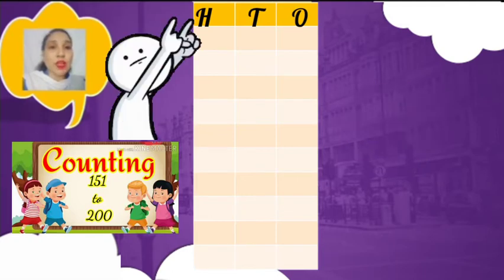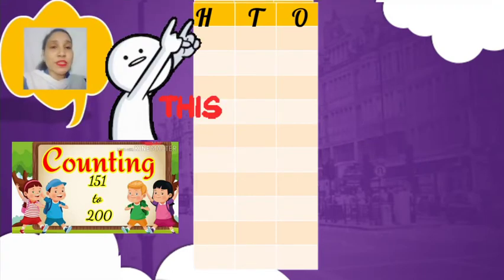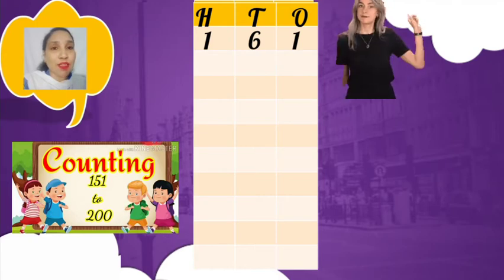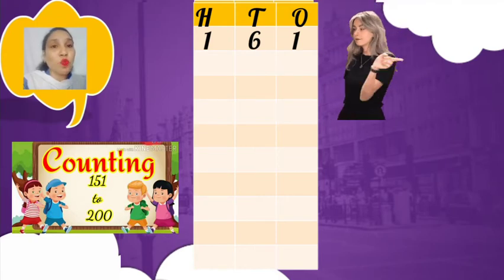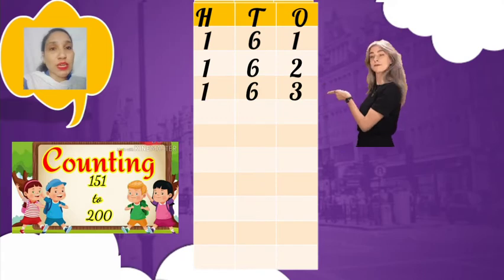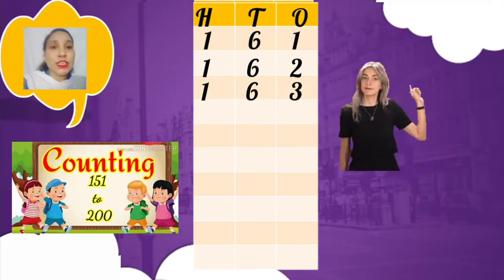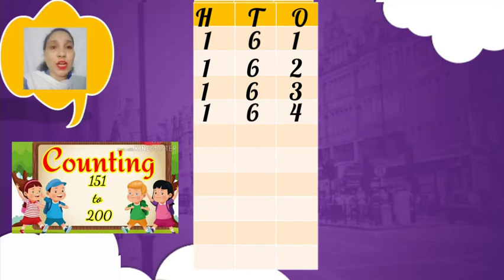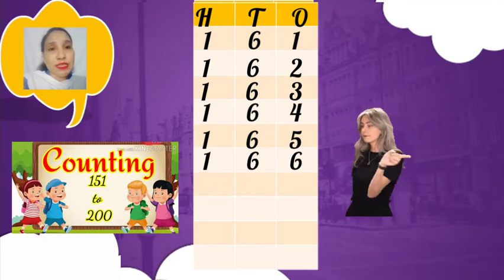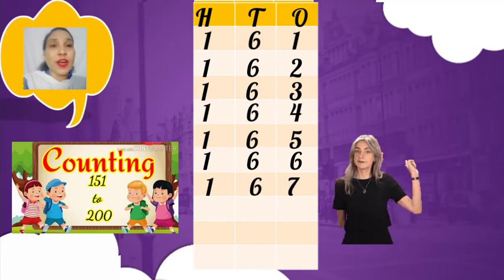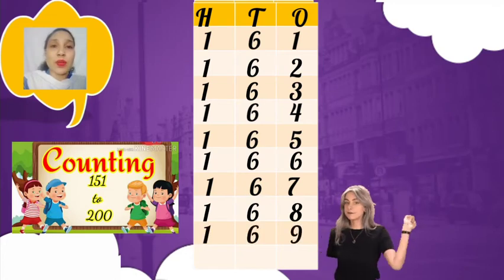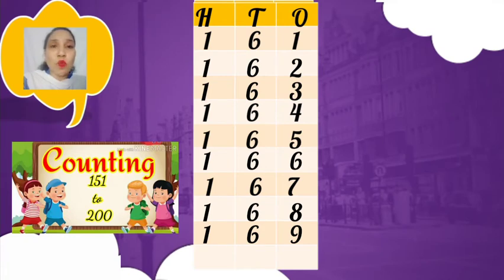Now see the next line of counting. Similarly, you have to write down hundreds, tens, and ones on the top of the counting. What comes after 160? That is 161. After 161 comes 162, after 162 comes 163, next number 164, next number 165, next number 166, next number 167, next number 168, the next number 169.